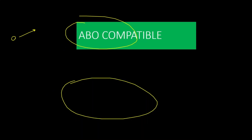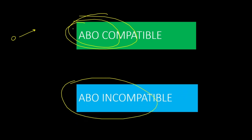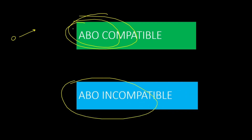If the donor and recipient blood groups are the same, that is called an ABO compatible transplant. If the donor and recipient blood groups are different, kidney transplant is still possible — that is called an ABO incompatible transplant, which we will cover in a separate video. Today we are focusing on ABO compatible transplant.